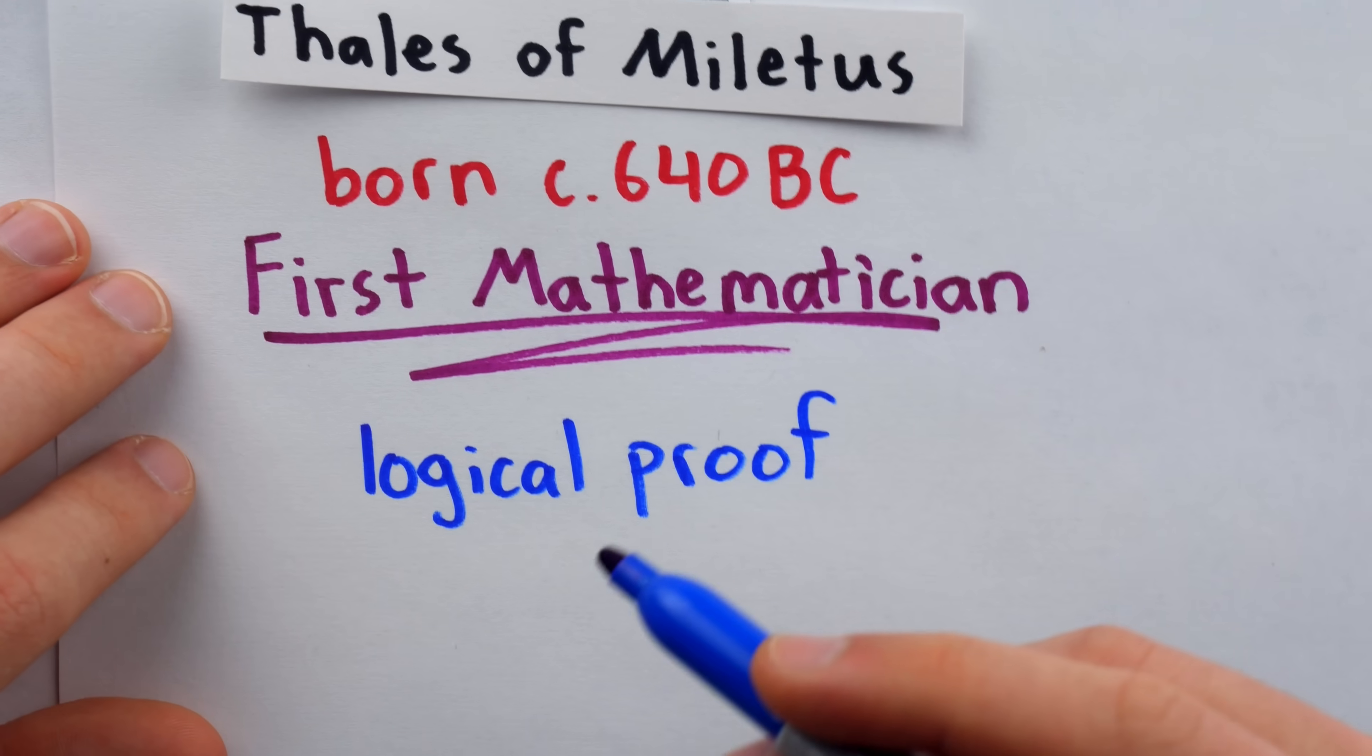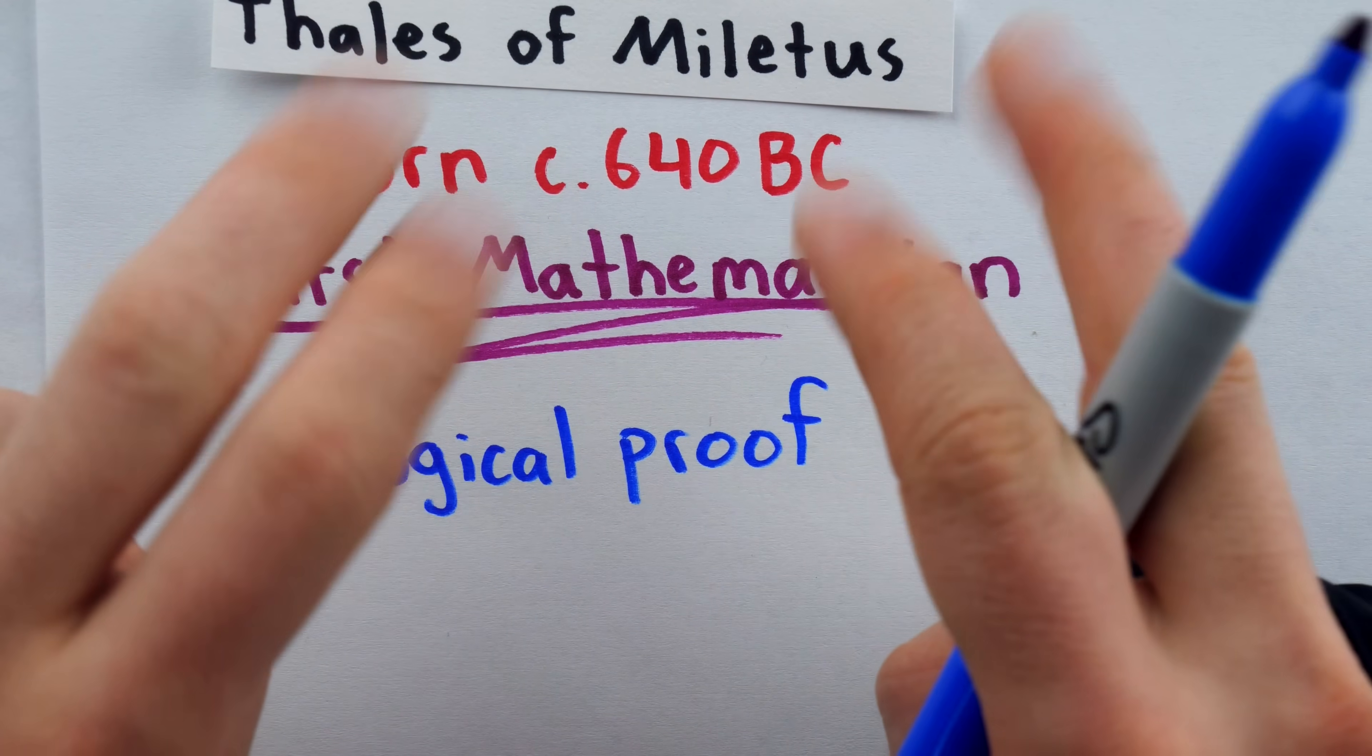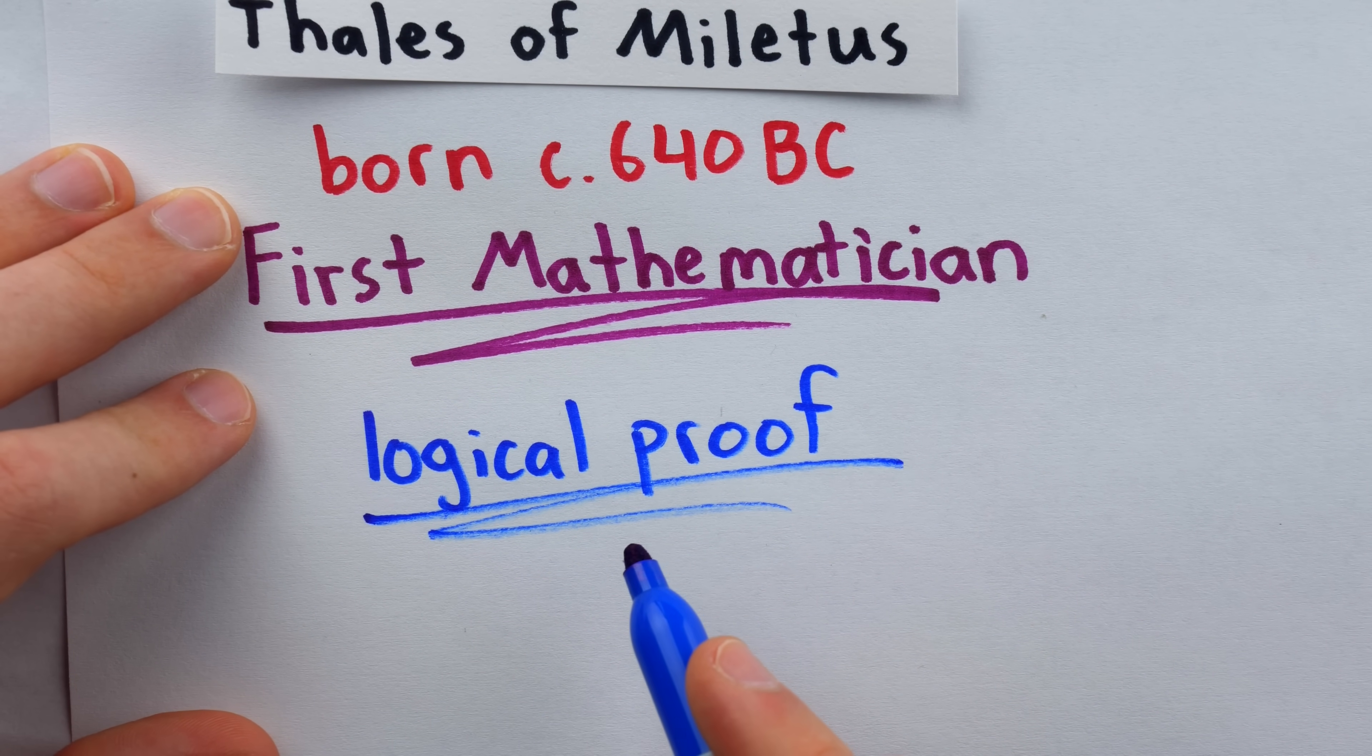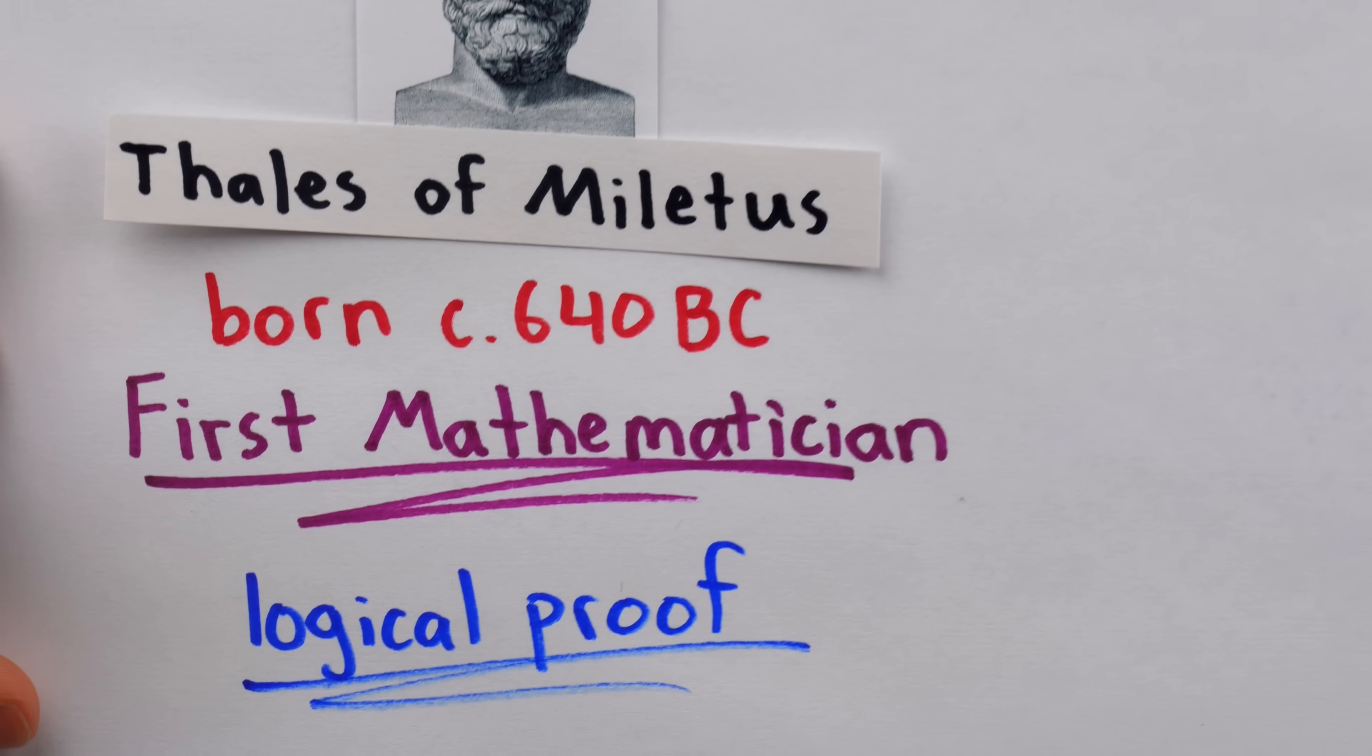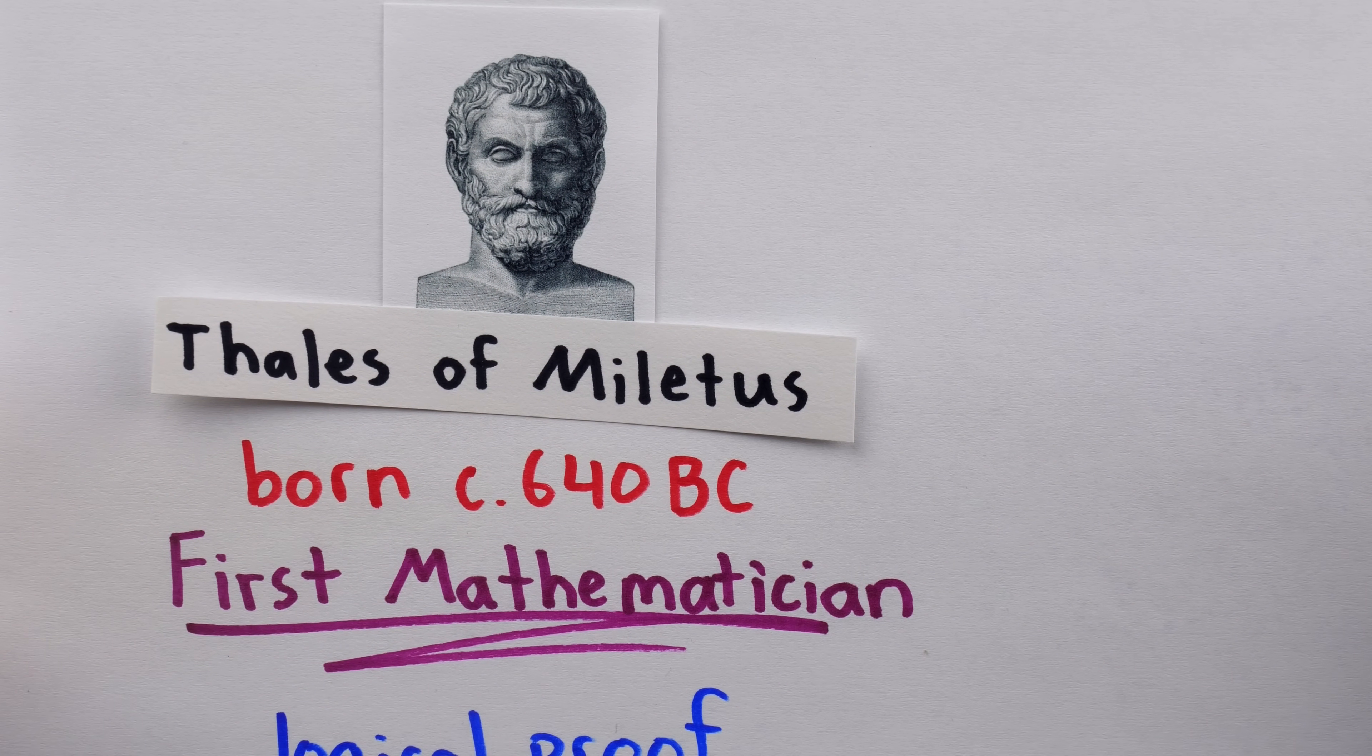Thus, his mathematical statements weren't 'it might be,' or 'it could be,' or 'it should be,' or 'it seems to be,' but after a logical proof, 'it must be.' I want to share with you some of the amusing stories that are told of Thales' life.